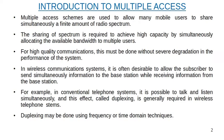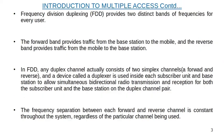Duplexing may be done using frequency or time domain techniques. Frequency division duplexing provides two distinct bands of frequencies for every user. The forward band provides traffic from the base station to the mobile, and the reverse band provides traffic from the mobile to the base station. In FDD, any duplex channel actually consists of two simplex channels — one forward channel and one reverse channel — and a duplexer is used inside each subscriber unit and base station to allow simultaneous bidirectional radio transmission and reception.